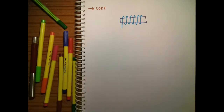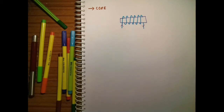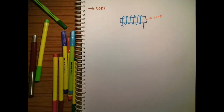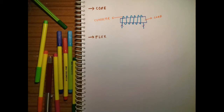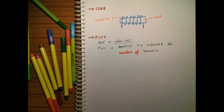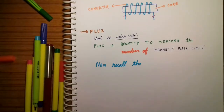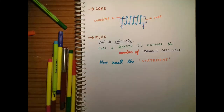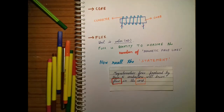Here come two terms: flux and core. Core is something around which a conductor can be wound. A core can be free space or a magnetic material like iron, or something like wood — all are considered as core. Flux can be understood as a quantity to measure the number of magnetic field lines. What MMF is actually doing is driving the flux in the core — remember this.